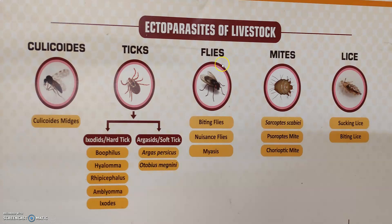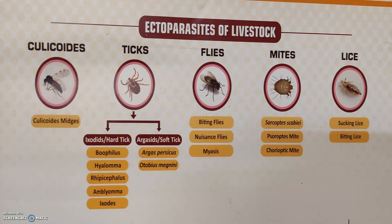Other ectoparasites include flies — categorized as biting flies, nuisance flies, and myiasis flies. Myiasis is a very important topic. Mites include Sarcoptes scabiei, Psoroptes mite, and Chorioptes mite. Lice are categorized as sucking lice and biting lice. These are the main ectoparasites present in livestock.